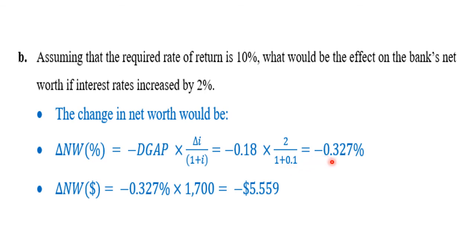The variation in net worth equals minus 0.327 percent, so the net worth will be decreasing by 0.327 percent. If we need the variation in dollar amount, it equals the percentage variation times the total assets. In this case, the net worth will be decreasing by $5,559.